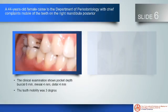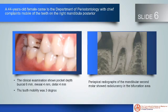The case report: a 44-year-old female came to the department of periodontal therapy complaining of mobility of the teeth on the right mandibular posterior. No abnormality in the extra-oral examination. By history taking, the patient didn't have a systemic disease. Clinical examination showed pocket depth buccal 6 mm, mesial 4 mm, and distal 4 mm. The mobility of the tooth was degree 3. Periapical radiograph of the mandibular second molar showed radiolucency in the bifurcation area.